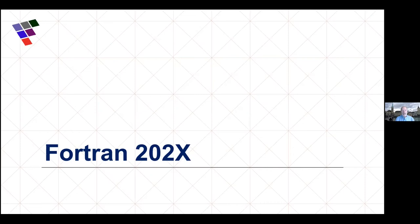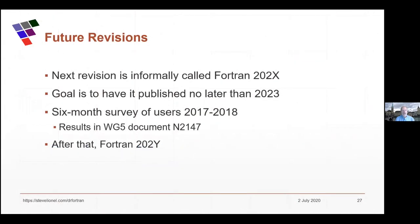Now I'm going to talk a little bit about Fortran 22X. This is an informal name — we'll fill in the X with whatever number it gets when published. Our hope is to have it published no later than 2023, which would be five years from Fortran 2018. We were doing very well up until COVID-19. We were going to have a big meeting of both WG5 and J3 just last week, but that didn't happen. We have about three quarters of the features pretty much nailed down and have made good progress. To figure out what features we wanted, we ran a six-month survey, whose results are published in a document. The next revision after that we're calling Fortran 202Y — we want to make sure it gets published this decade without an eight-to-ten year gap.